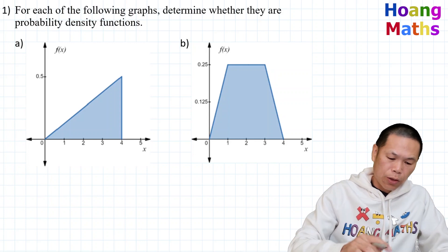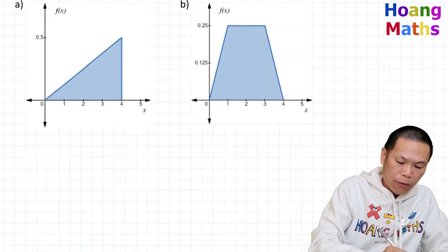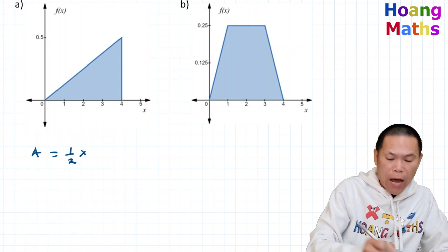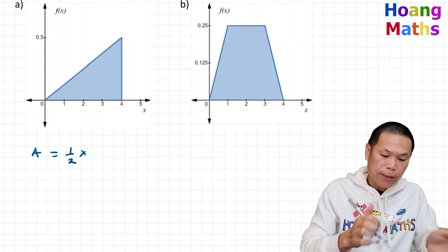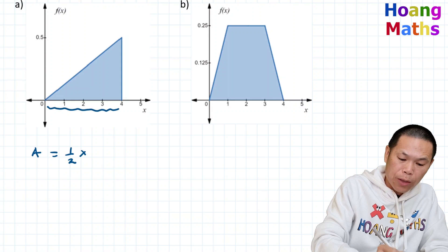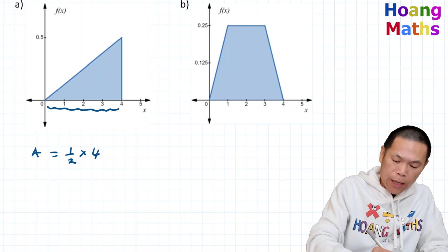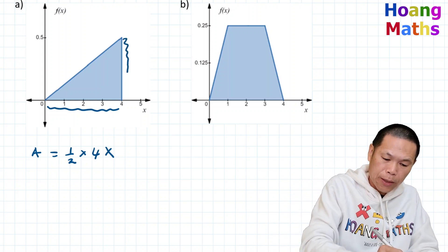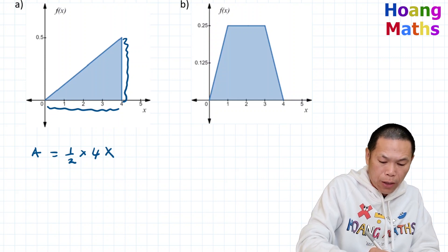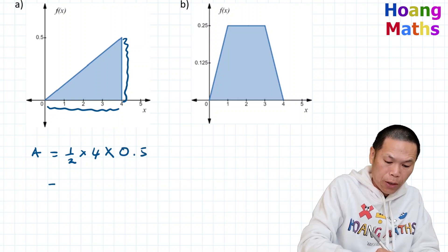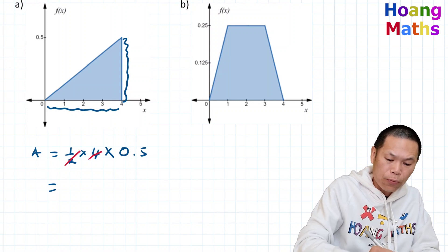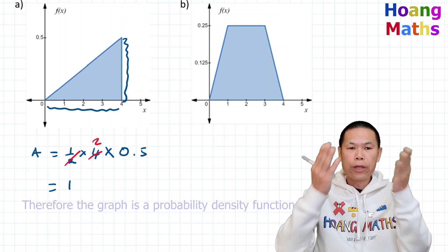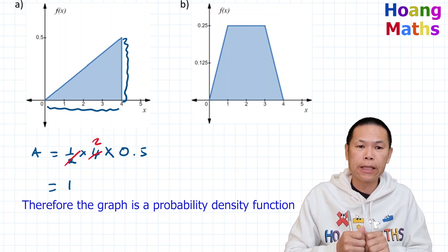So part A. We can find the area of the triangle. The area of this triangle is a half times base times height. The base is four units, and the perpendicular height is 0.5. So a half of four is two, and two times a half is one. The answer is one, so therefore it is a probability density function.